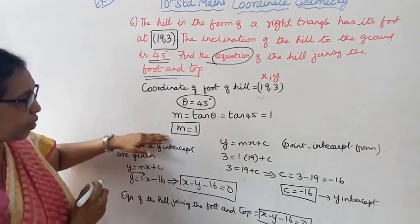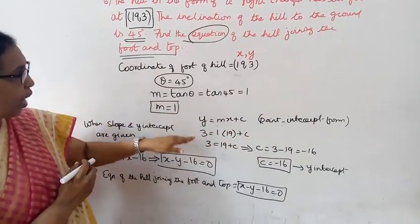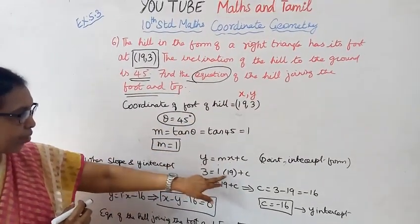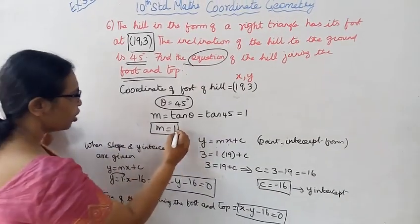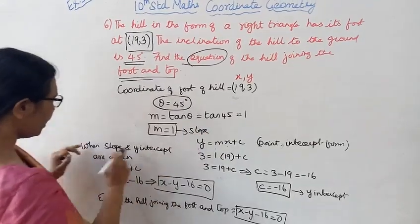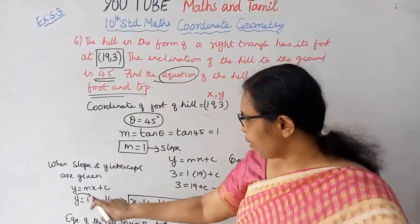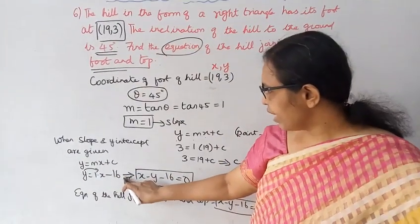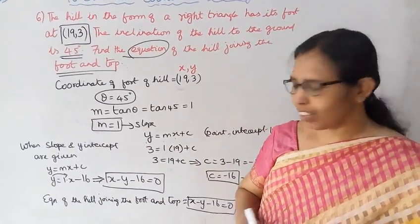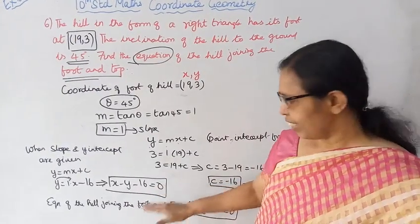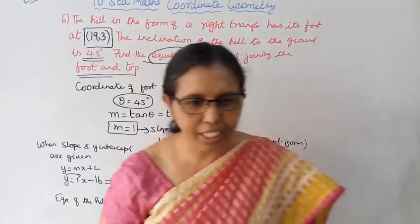Y equal to mx point intercept form. When slope and y-intercept are given, we substitute the values. The line equation becomes X minus Y minus 16 equal to 0.